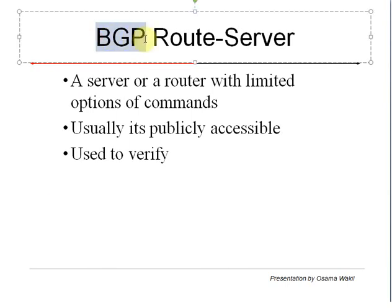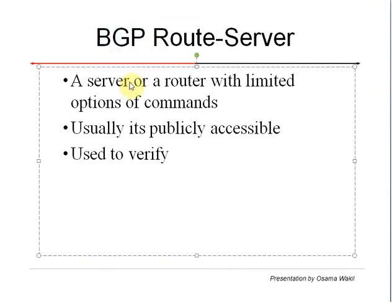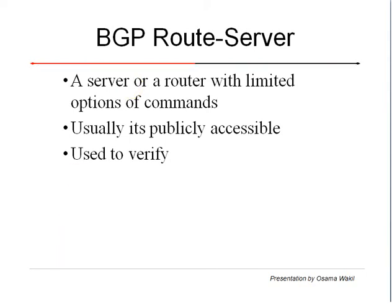The other option we have is BGP route servers. BGP route servers are more like a router CLI — they are publicly accessible, often via Telnet or SSH. We can run pings, trace routes, and show commands like 'show ip route' or 'show ip bgp'. These are essentially dummy devices — they are not real production routers, they are just BGP-speaking devices. Let's Google some route servers and find a good one.